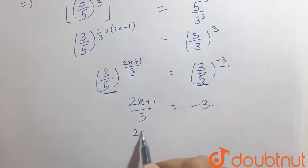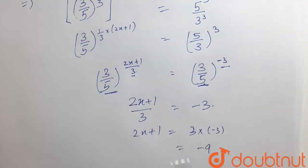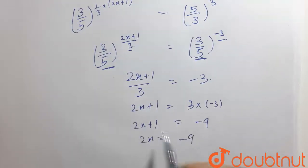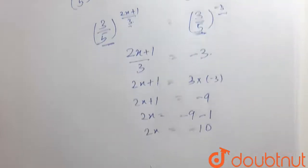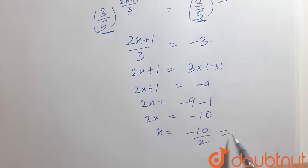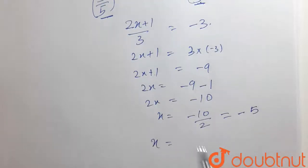So by cross multiplying, 2x plus 1 equals 3 times minus 3, which is minus 9. From here, 2x equals minus 9 minus 1, which equals minus 10. And here, x equals minus 10 over 2, which equals minus 5. So the value of x equals minus 5, and this is our answer.